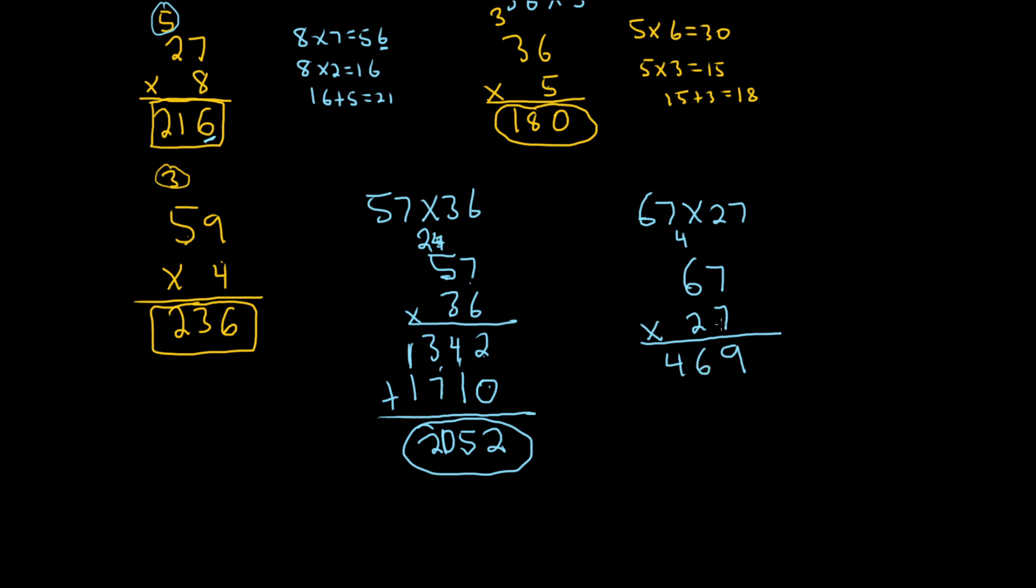Let's check that. 7 times 7 is 49, we wrote down the 9, carry the 4. 7 times 6 is 42, 42 plus 4 is 46. Then we go to the 2, and remember, when you do this one, you write the result under the 2. So you line them up. So 2 times 7 is 14, so you write down the 4, and then you carry the 1. 2 times 7 is 14, carry the 1. 2 times 6 is 12, 12 plus 1 is 13.